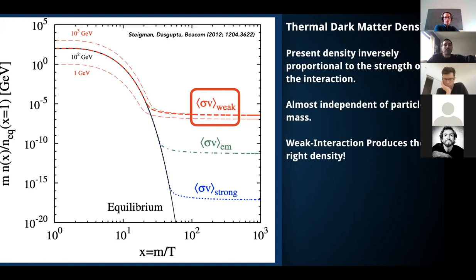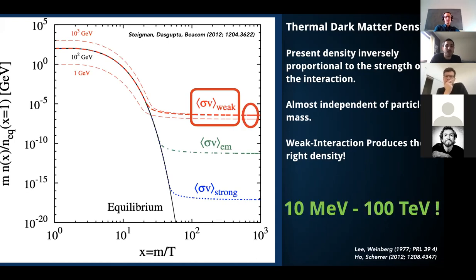The WIMP miracle is just the statement that if the cross-section between two dark matter particles — the probability of those particles finding each other — is the weak interaction cross-section, which is already a fundamental cross-section in physics, then you get the right dark matter density today. You start with thermal equilibrium, put in the known weak force to dilute the dark matter density, and you get the dark matter density observed today. The second part of the WIMP miracle is that this is a relatively mass-independent statement: for dark matter masses from 1 GeV up to 1000 GeV or even 100 TeV, you get almost the same dark matter density today, regardless of the initial mass. So we have to span and search a fairly large parameter space.